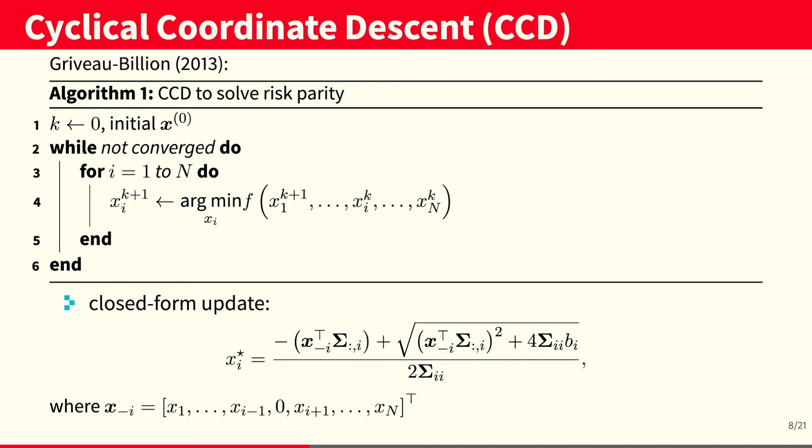The basic idea of the CCD algorithm is that it fixes all the variables except one and solves for that one free variable. And it turns out that there exists a closed-form update for that free variable. To the best of our knowledge, the CCD algorithm is one of the best algorithms both in scalability and in speed.